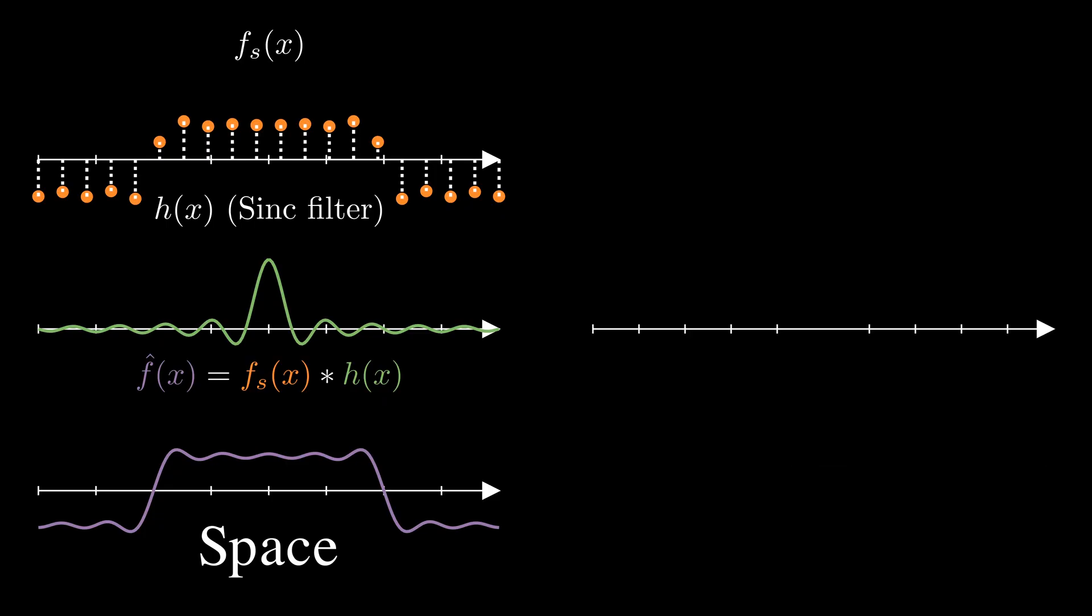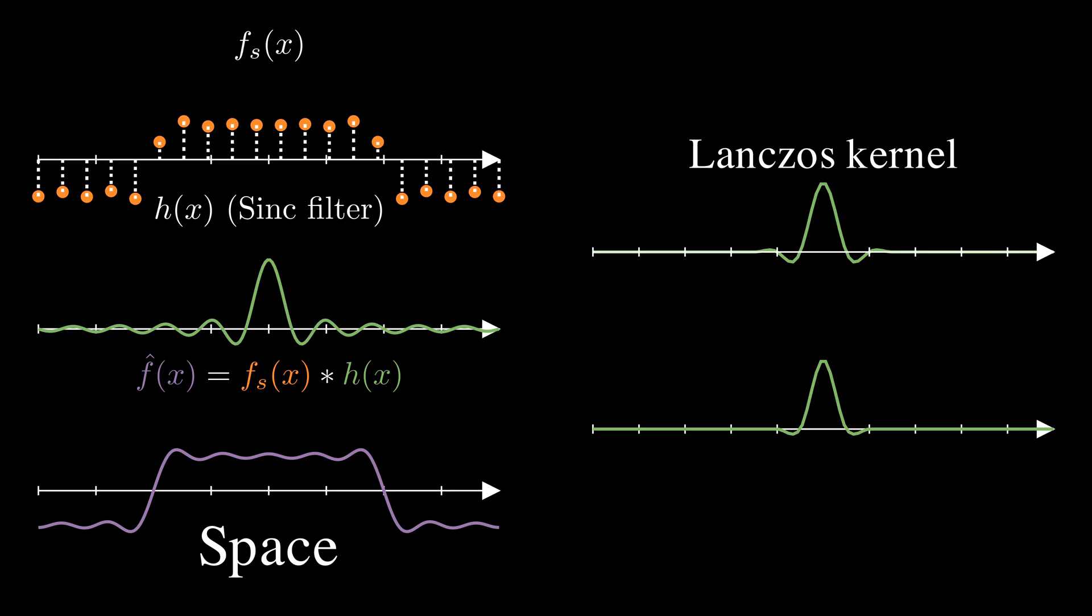How do we fix this? One solution is to multiply the sinc function with a window function. A popular choice is the Lanczos window, which gives us Lanczos resampling. Another approach is using a bicubic kernel leading to bicubic interpolation, which along with Lanczos is widely used for image resizing and interpolation.